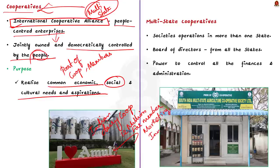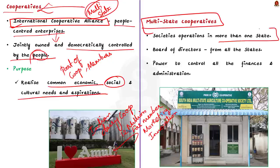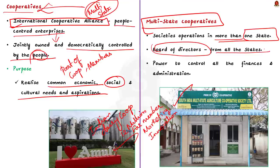Multi-state cooperatives are societies that have operations in more than one state — for example, a farmer producer organization that procures grains from farmers across multiple states. The board of directors of these multi-state cooperatives are drawn from all states where the cooperative operates and have the power to control all finances and administration. There are around 1,500 multi-state cooperative societies registered in India, with the highest numbers in Maharashtra.